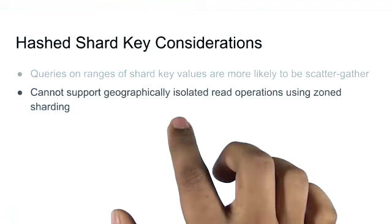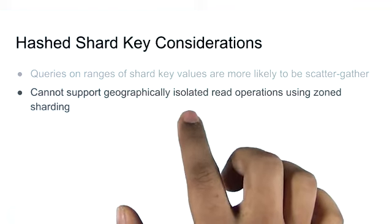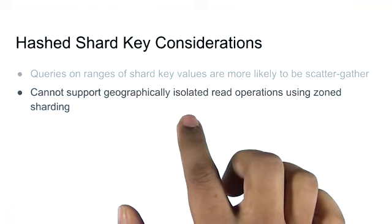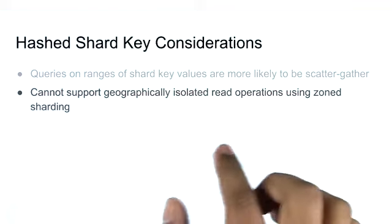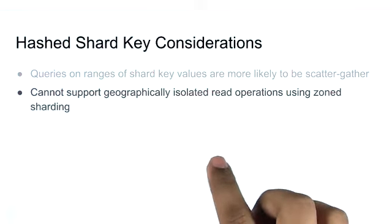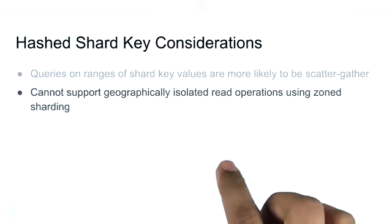You're going to lose the ability to use features like zone sharding for the purpose of geographically isolated reads and writes. Again, if everything is randomly distributed across every shard in the cluster, there's no real way to isolate data into groupings like geography.